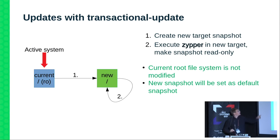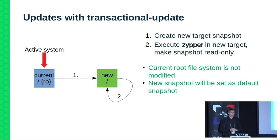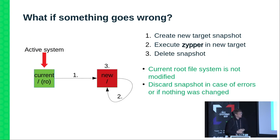Looking at the definition of what we wanted to achieve, we have the option to roll back if anything goes wrong, but that atomicity we wanted to achieve is not given with the current mechanism. With transactional updates, we change that behavior. We still have our currently running system in the blue snapshot, and we will create another snapshot next to it based on this system. The update itself will be performed in that new snapshot — the currently running system won't even notice, all your system services will just continue to run, and the update will be running in the background.